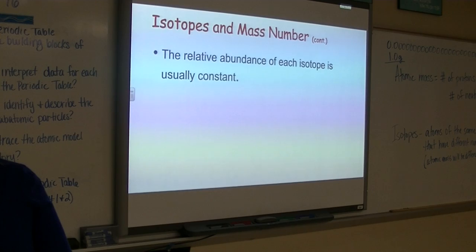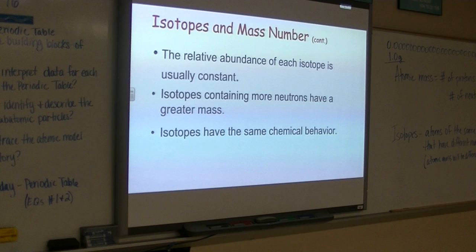Okay, now, these three things you need to write down as well. The relative abundance of each isotope is usually constant, which is what I was just talking about. Now, isotopes containing more neutrons have a greater mass. That makes sense because we know that neutrons have a mass of about one AMU. So every time you add a neutron, you're adding an additional AMU. So the number would go up by one every time that you add another neutron.